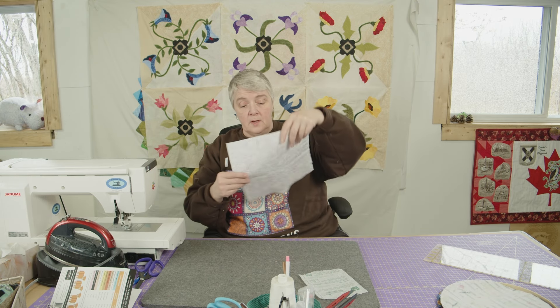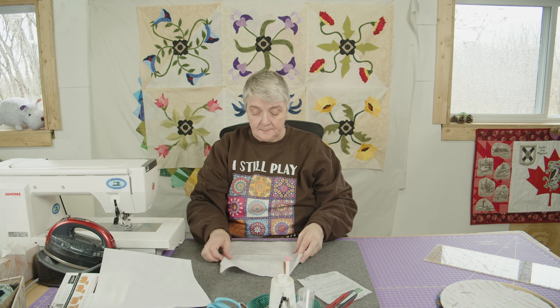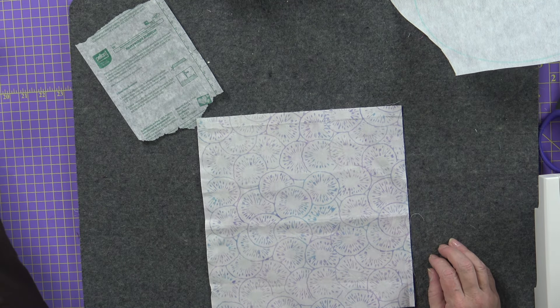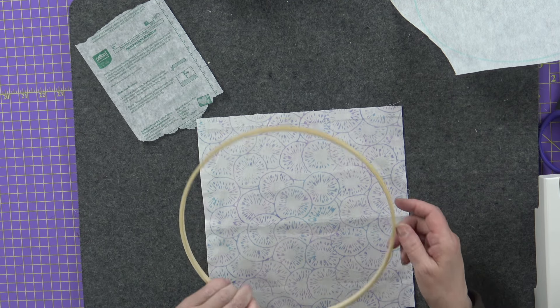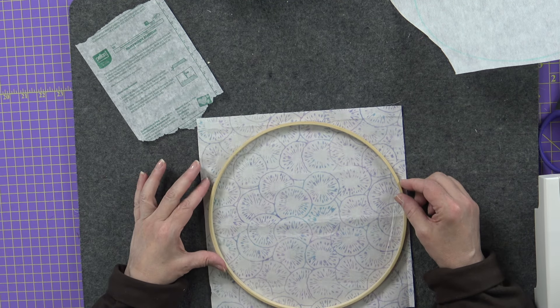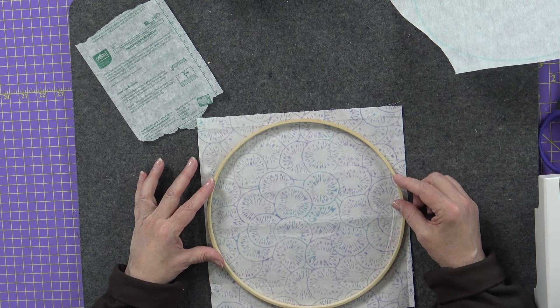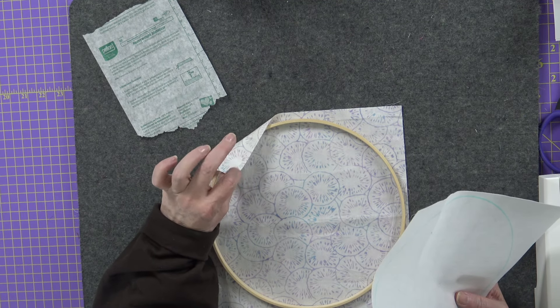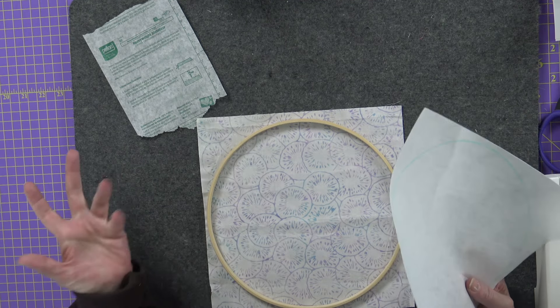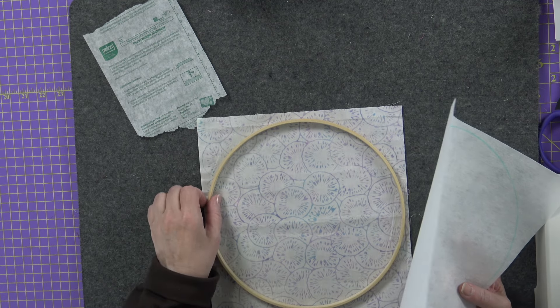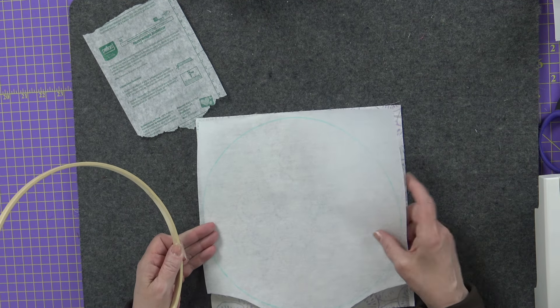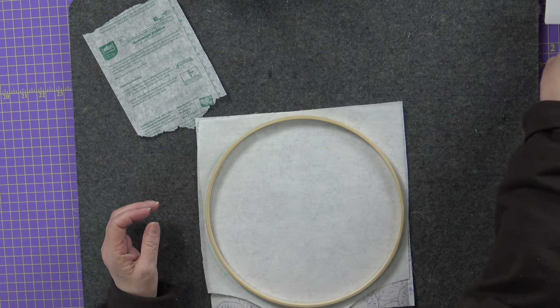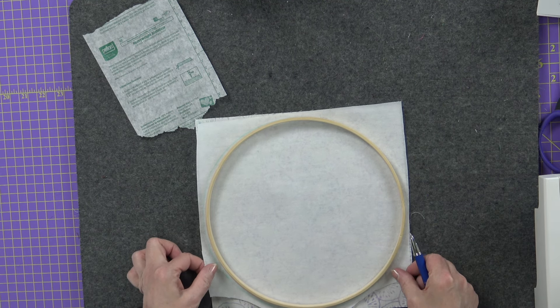So we're going to start off here with a 10-inch square of fabric. And then I have this nice little hoop. I was like, okay, what do I have around here that's circular? And I do cross-stitching. So this hoop is a perfect size. It is a 10-inch hoop. And I'm going to just make a circle.